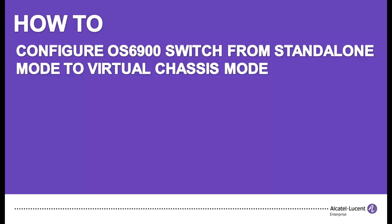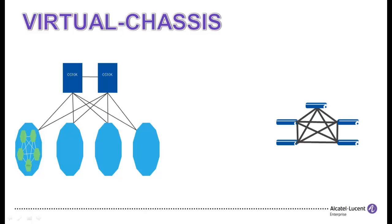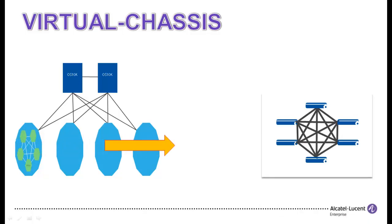This video presentation is a quick tutorial on configuring 6 Alcatel Lucent OS 6900 switches to operate as a single virtual chassis switch. A virtual chassis is a group of switches managed through a single management IP address that operates as a single bridge and router. It provides both node level redundancy for layer 2 and layer 3 services and protocols, acting as a single device.